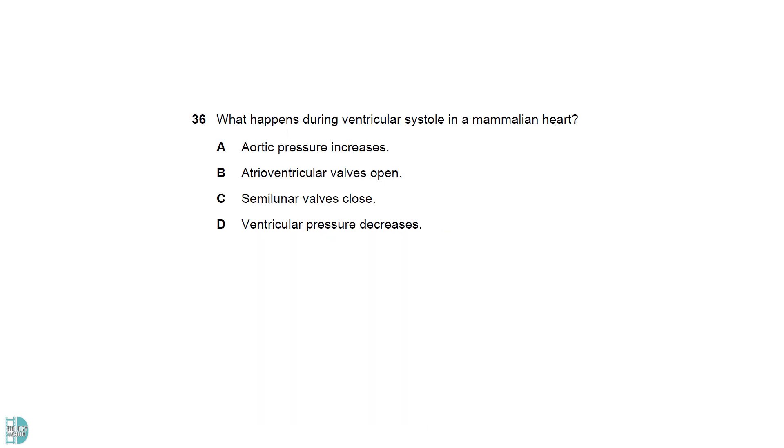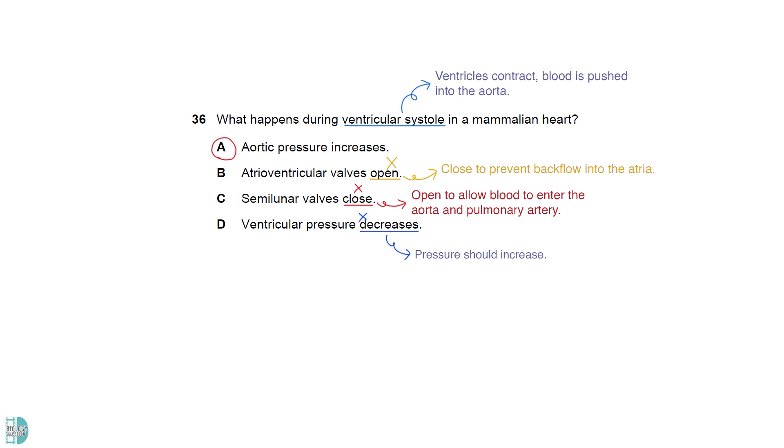During ventricular systole, blood is pushed into the aorta, causing an increase in aortic pressure. So, A is correct. B is wrong, as the AV valve should close to prevent the backflow of blood into the atria. C is wrong, as the semilunar valves are open to allow blood to enter the aorta and pulmonary artery. D is incorrect, as the pressure in the ventricles should increase.